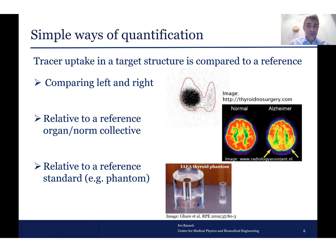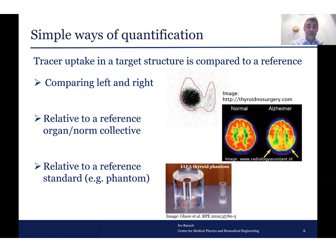You can compare uptake to a reference organ — for example, more than the liver, same as the liver, less than the liver — and do that visually. Especially for brain imaging, one uses norm collectives. That means you build up a normal brain from a database of 10, 20, 30, or 50 healthy patients, then compare a new acquisition to that reference and quantify the differences in terms of how many standard deviations from the norm collective you are away from the average value.